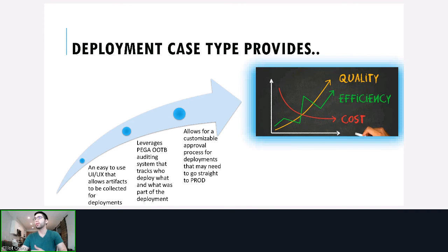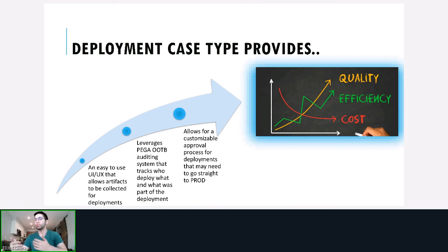What does this bring to your business? It makes collecting artifacts much easier — no more wondering what needs to be deployed when your QA environment is ready. We leverage Pega's out-of-box auditing system, so you can track who deployed and what was part of that deployment. We allow for a customizable approval process so you don't have to go around getting emails from stakeholders — there's one place to track all of that for auditing and reporting.